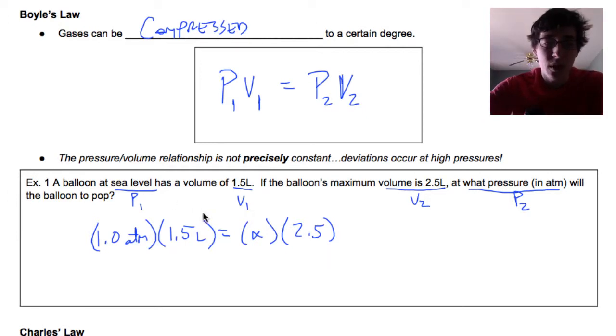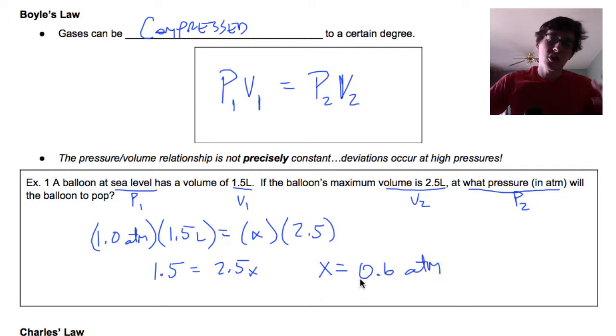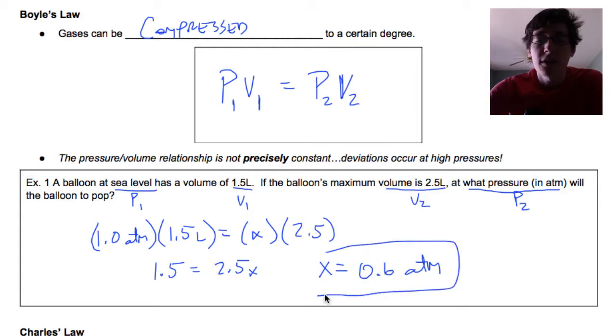This is just algebra. If we solve for x, 1 times 1.5 gives us 1.5 equals 2.5x. When we divide by 2.5, x equals 0.6 atmospheres. So if the pressure outside of that balloon drops to 0.6 atmospheres, the volume will get so large that the balloon will pop. This is your answer, 0.6 atmospheres.